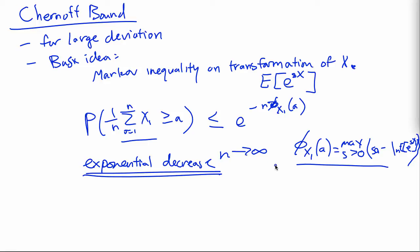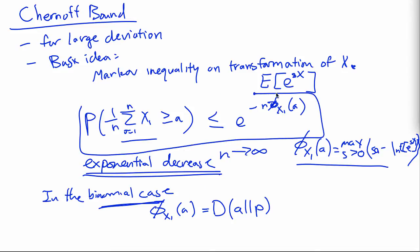And in the binomial case, we could actually solve for this. It's also in the lecture notes. You'll end up finding out that phi of X1 is the Kullback-Leibler divergence. Sorry if I butchered his name. But this is just a special case of the general Chernoff bound here, which you can derive from the lecture notes.